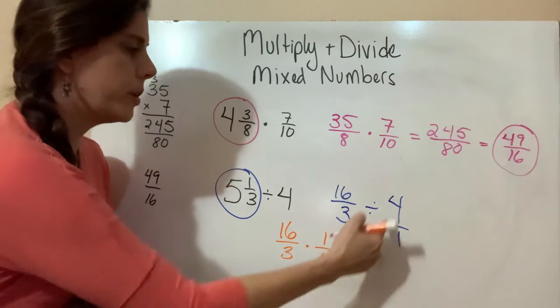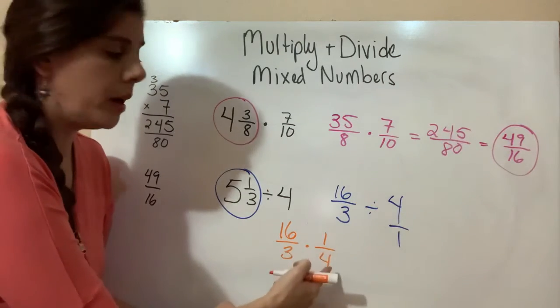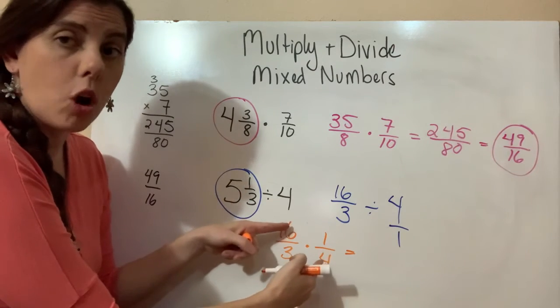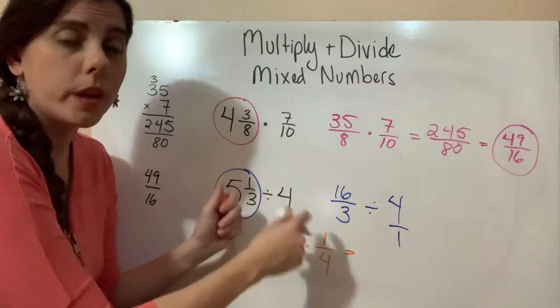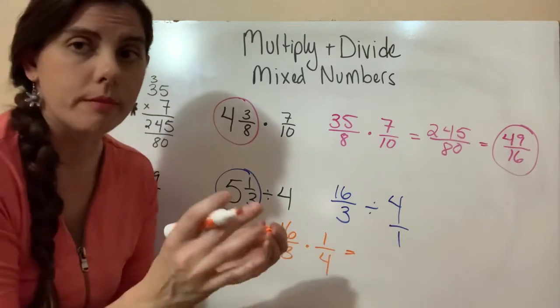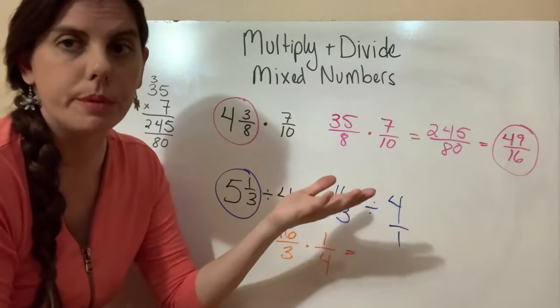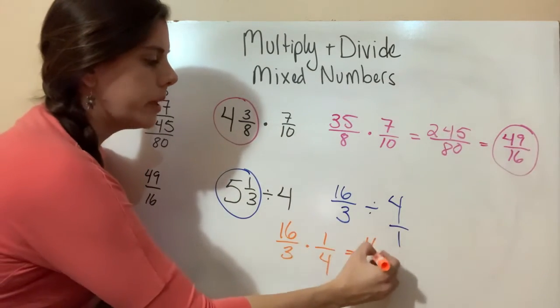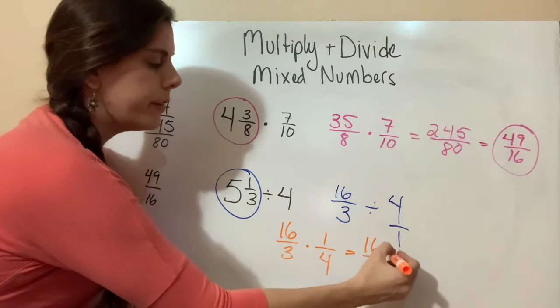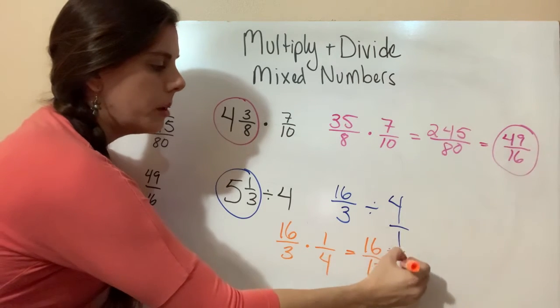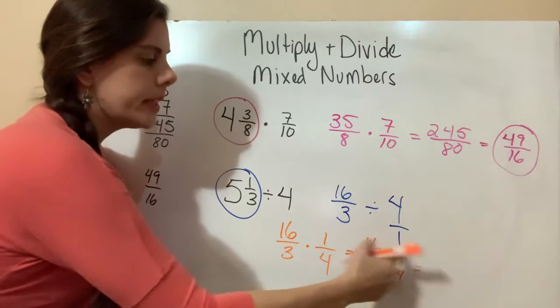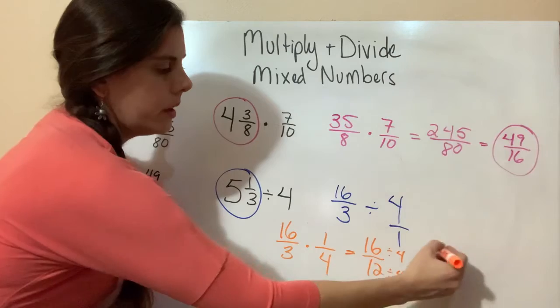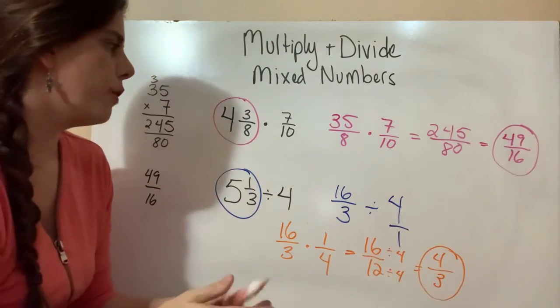So we have 1/4. Instead of the 4 being on the top, now it's on the bottom. We can go ahead and either reduce now—we can reduce the 16 and this 4—or we can reduce later, either one. We're going to end up with numbers that are quite small, so it'll be just as easy to reduce at the end. Whatever you're more comfortable with. 16 times 1 is 16, 3 times 4 is 12. We can divide both of these by 4. 16 divided by 4 is 4, 12 divided by 4 is 3. So our answer is 4/3.